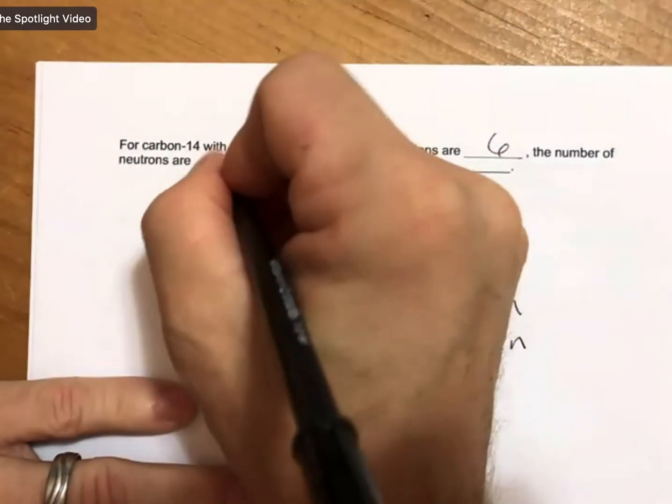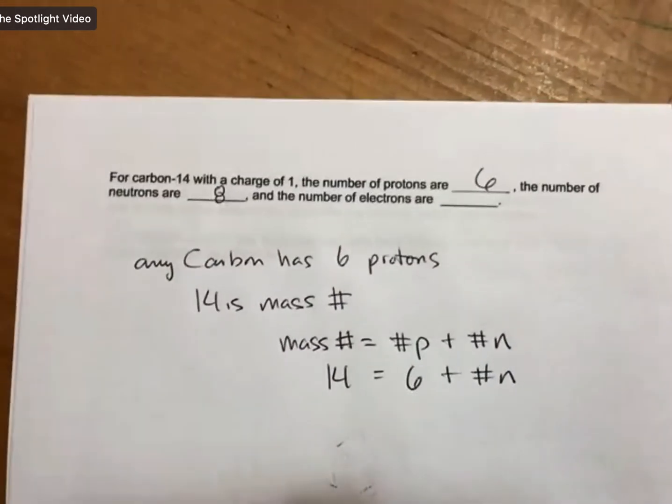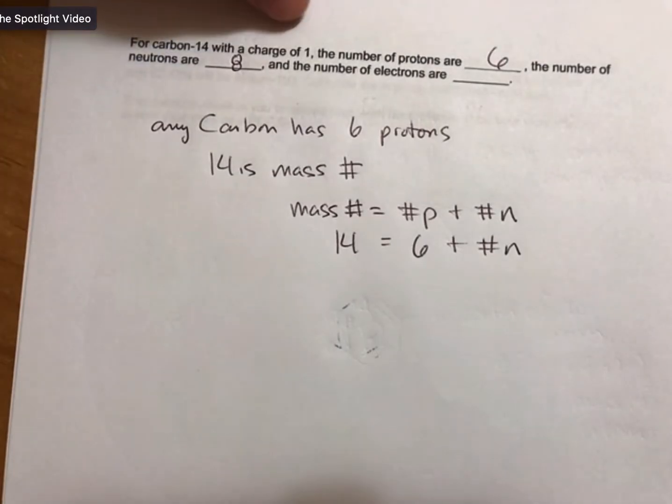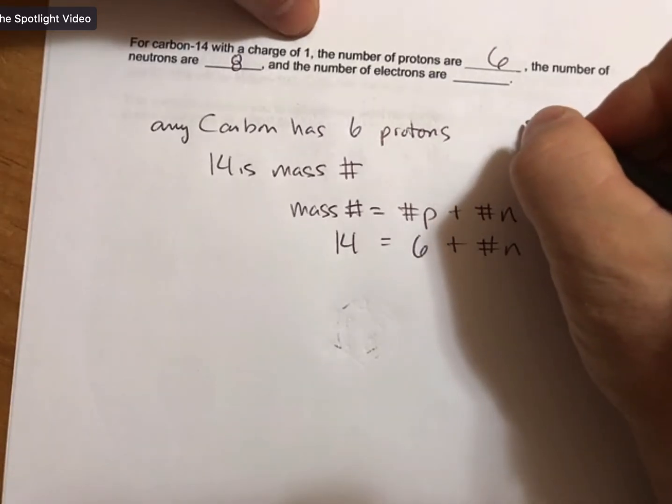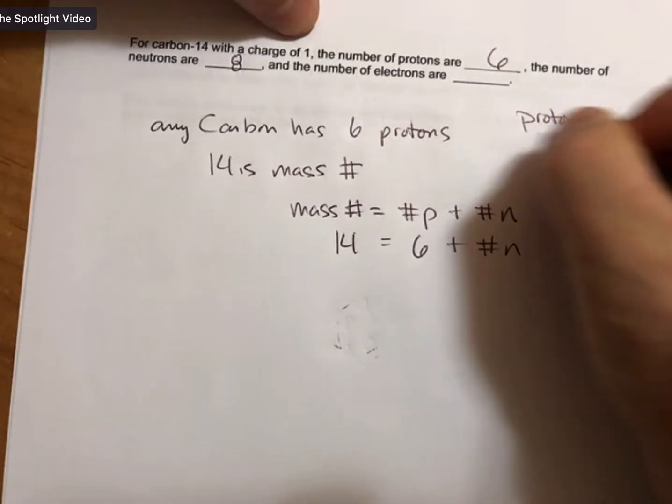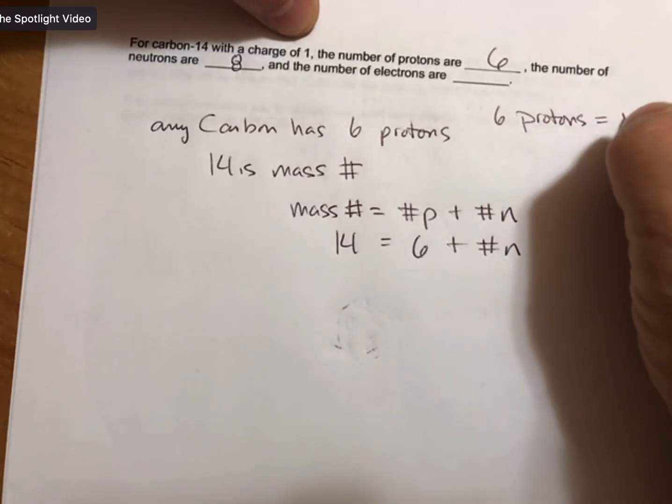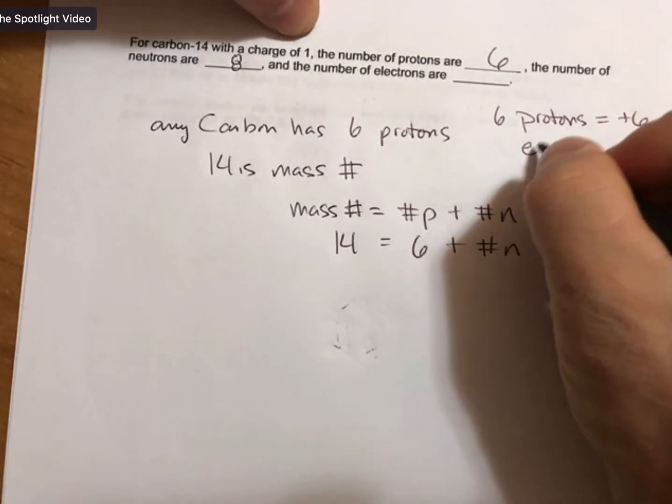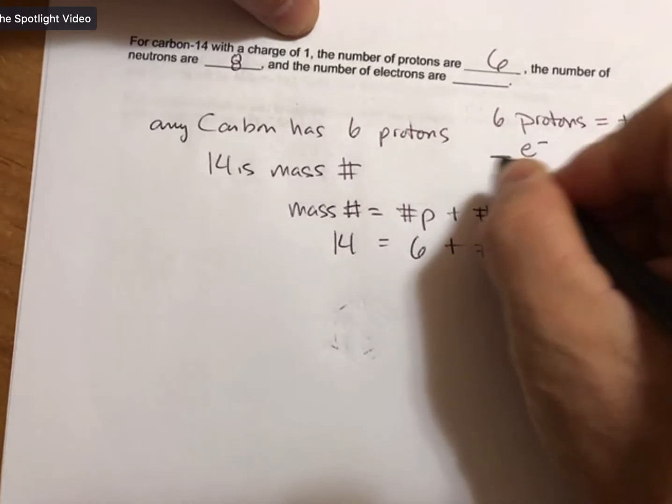We have 14 equals 6 plus number of neutrons, and we get eight for the neutrons. Now we have a charge of one which is plus one. To get a charge of plus one, we know that the protons are positive, so six protons equals plus six. We know that electrons are negative.